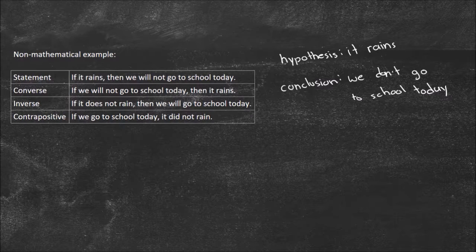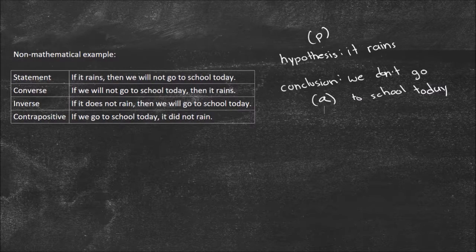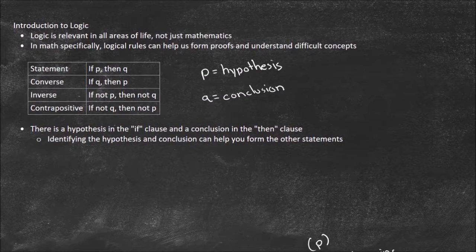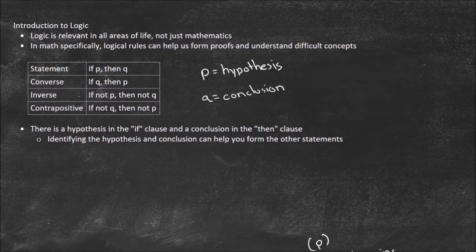So that's the statement, and that's where we start. Let me write this as P, and this is going to be Q. Now we get into what's called the converse, the inverse, and the contrapositive. We derive all of these things from knowing P and Q. The converse says: if Q, then P.